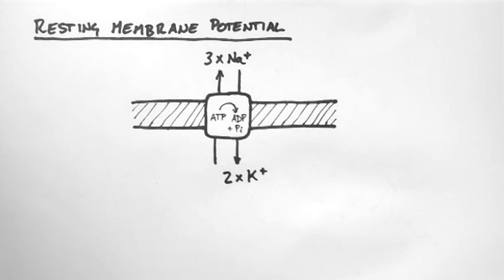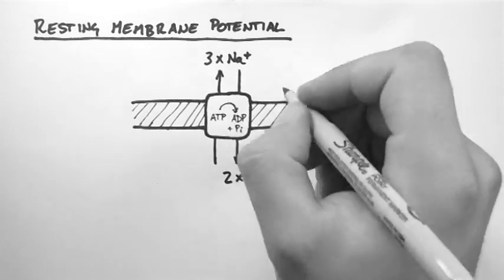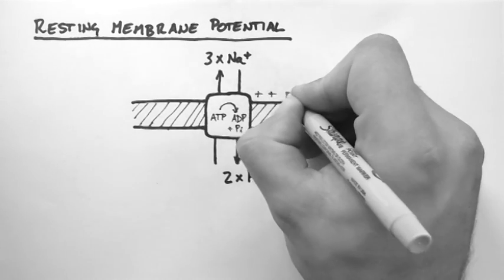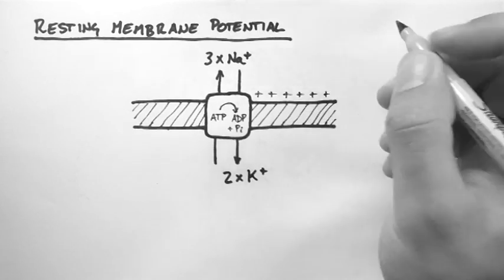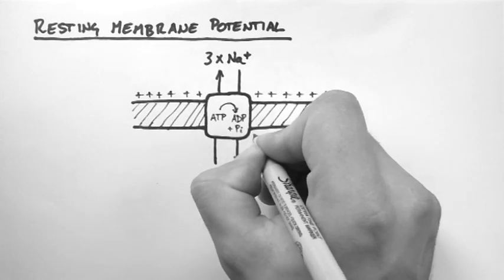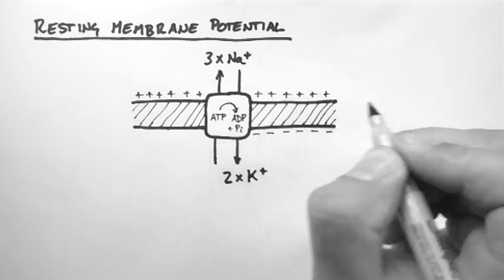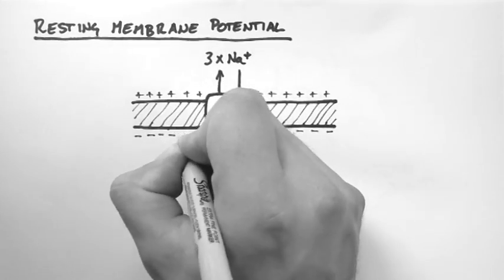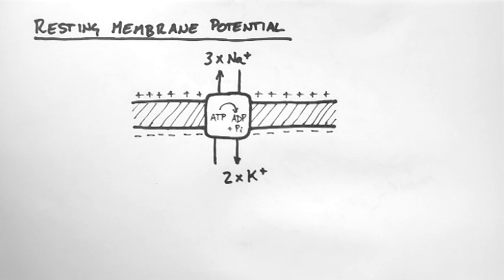Now because we are pumping 3 positive ions out of the cell and only 2 positive ions in, we get an excess of positive ions on the outside of the cell. And conversely we get a deficit of positive ions in the cell, which causes an effective negative ion excess.